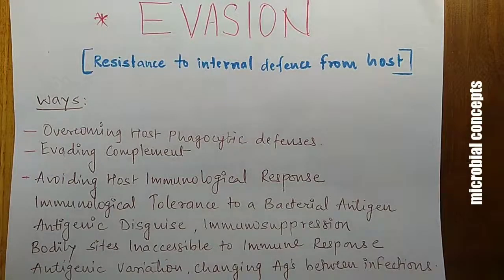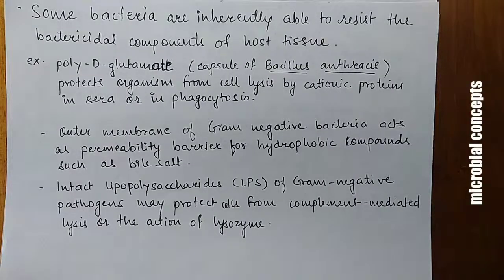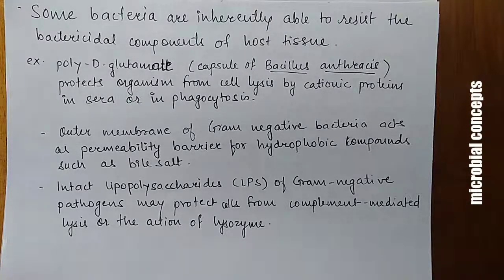These are some ways or methods used by pathogens to evade the host immunological response, listed below. These examples will give you an idea about how bacteria are inherently able to resist bactericidal components of host tissue.